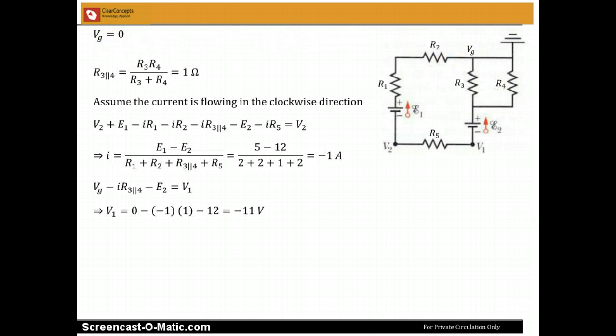So using the loop rule, first of all, we find the equivalent resistance for R3 and R4. So R3 and R4 are connected in parallel. When you apply this, you will find the equivalent resistance to be equal to 1 ohm.